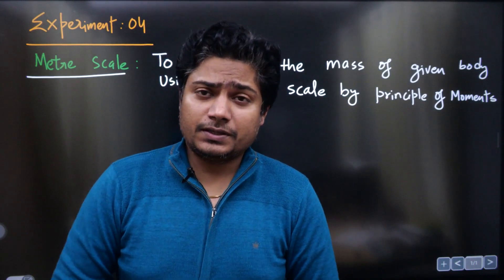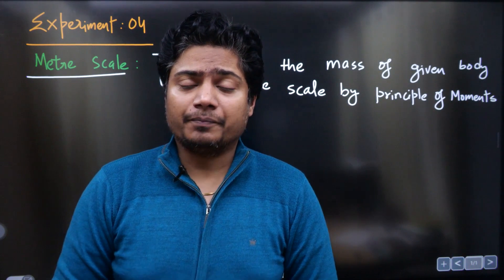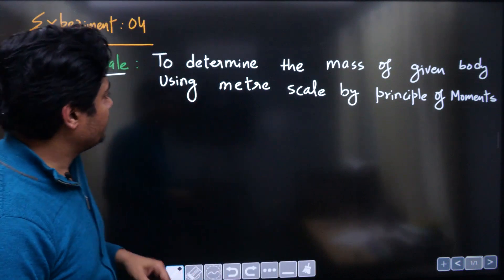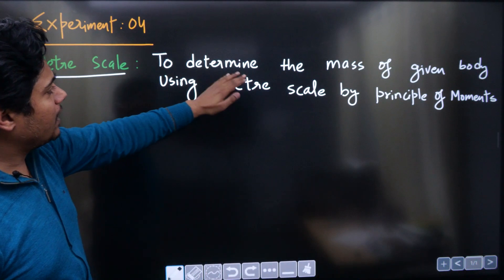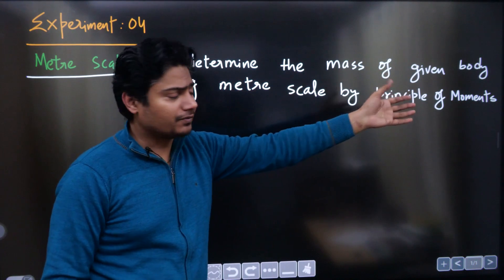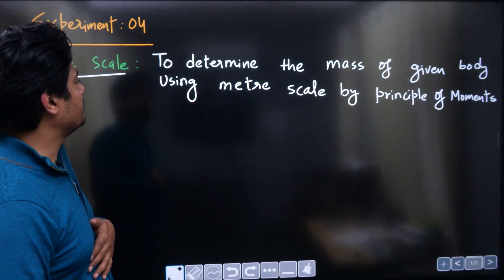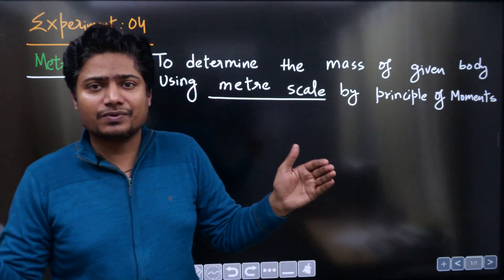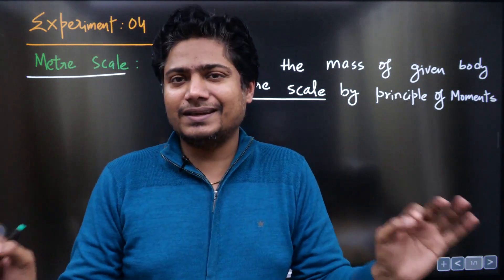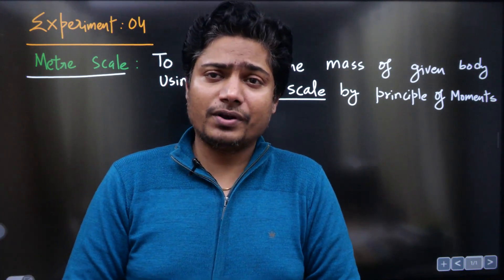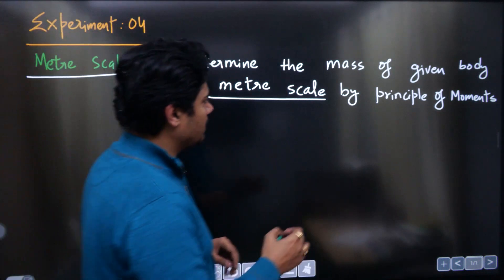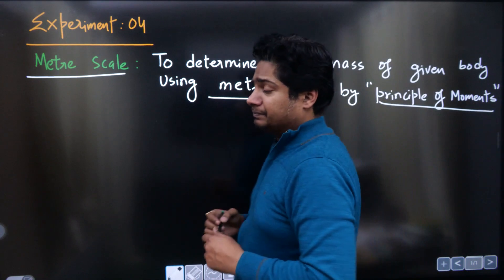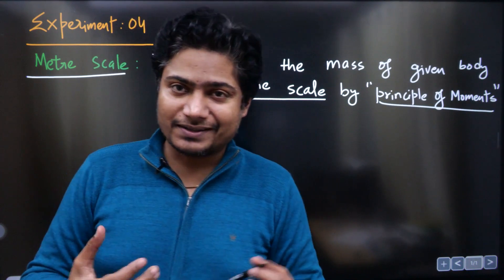Let us now discuss experiment number 4. The exact statement is to determine the mass of a given body. We have to find the mass of an unknown body using the meter scale — a scale whose length is 1 meter. Using this scale you can find out the mass of an unknown body by the principle of moments. The principle of moments is the basic concept behind this experiment.